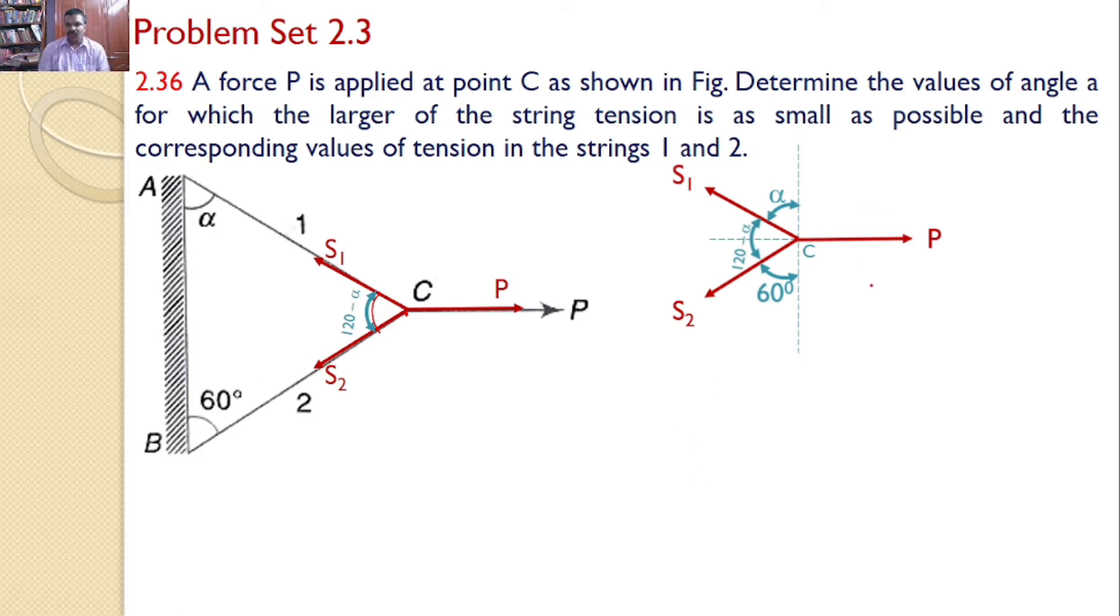Now there are three forces. All three forces are concurrent and all three forces are divergent. So I can apply the sine principle. Now according to the sine principle, the force P divided by sine of angle between the two forces S1 and S2 is constant. That means P divided by sine of angle between S1 and S2 is 120 minus alpha. Hence P divided by sine 120 minus alpha.